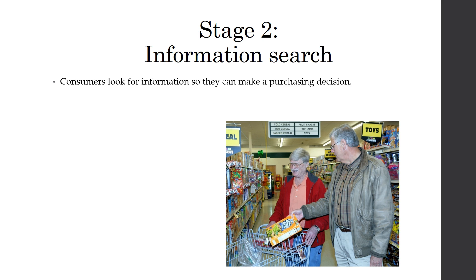Stage two: now that you convince yourself there's a problem, consumers have to look for information so they can make a good purchasing decision — it's time to gather up the information. When it comes to doing these searches, there are different types. There's what is called a pre-purchase search, which is when we typically need information to make a purchase — we don't know something about a given product, so we go out and gather it. But then there's what we call an ongoing search, which occurs when we are browsing — gathering information for a possible future purchase, if we ever get around to it.